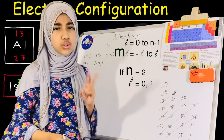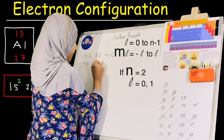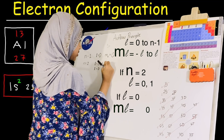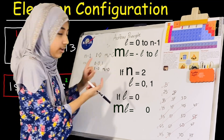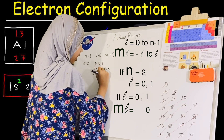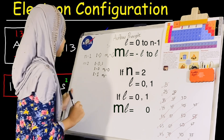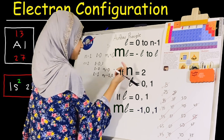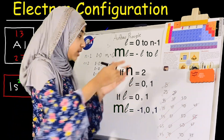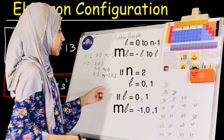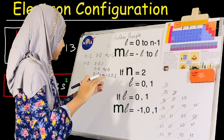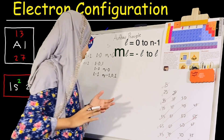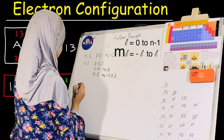Since we have two values of l for n equals 2, we handle them separately. When l equals 0, ml equals 0 — as we already established. When l equals 1, ml equals negative 1, 0, and positive 1, because we take all integers from the negative of l up to positive l.